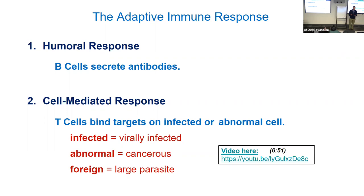The T cell response looks for things too big to kill by phagocytosis, and that fits three categories: virally infected cells displaying viral glycoproteins; large pathogens such as parasitic worms or certain protists that are just massive; and other abnormal human cells — usually cancerous, potentially cancerous, or tumor-forming cells. That's where the cell-mediated response comes in — killing cells directly, not smaller particles.